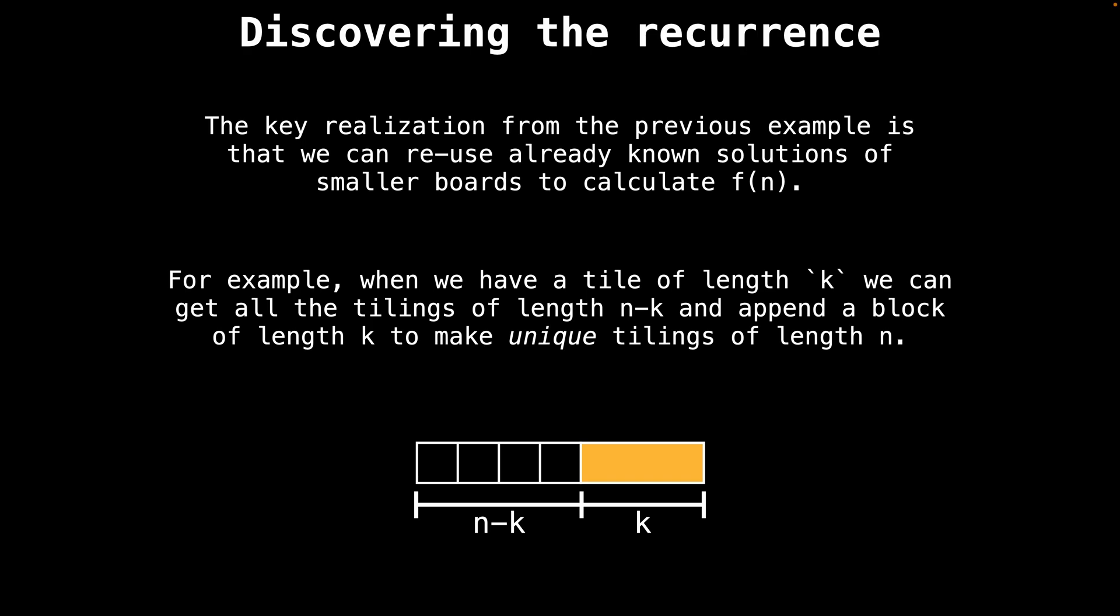Let's take a look at how we might discover the recurrence relation to count the number of board tilings. The key realization from the previous example is that we can reuse already known solutions from smaller board sizes to compute f(n). For instance, suppose we have a tile of length k that we can use to fill boards. If we get all the tilings of length n-k and append a block of length k, then we have just generated a new unique set of tilings of length n using the block of size k.